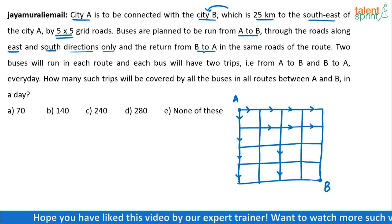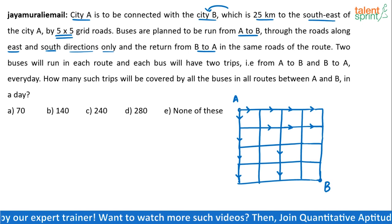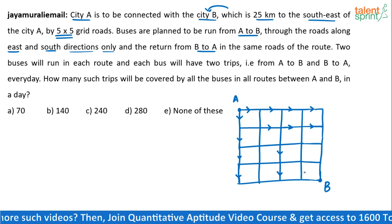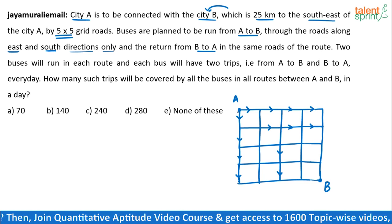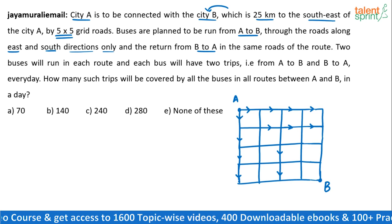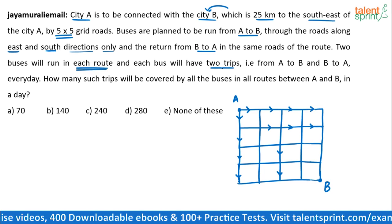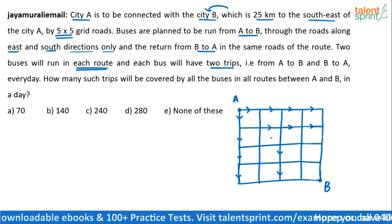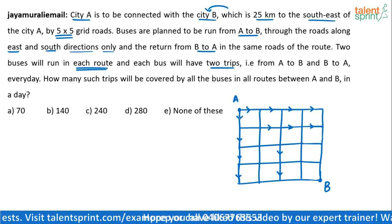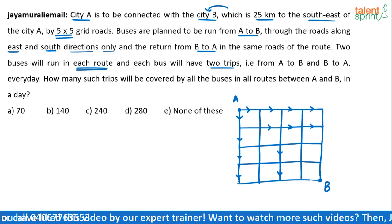The return from B to A will of course be northwards and westwards only. From A to B you can go only southwards or eastwards, and from B to A when returning you go northwards or westwards. Now, two buses will run in each route. Try to observe that there are going to be multiple routes here — that's what we have to work on. How many routes are there from A to B?